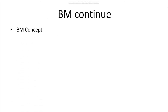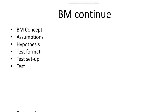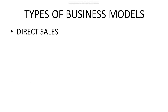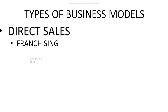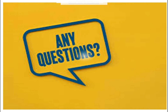To summarize: the first business model cycle involves drawing the concept, identifying assumptions, building hypotheses, choosing test formats, setting up tests, and reviewing results. The three types of business models are direct sales, franchising, and advertising. If you have any questions, you can contact me via email or WhatsApp. Thank you so much.